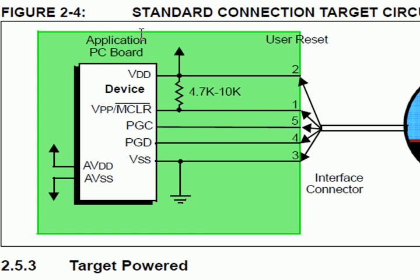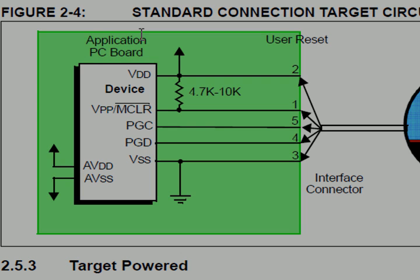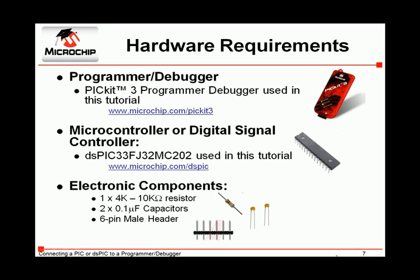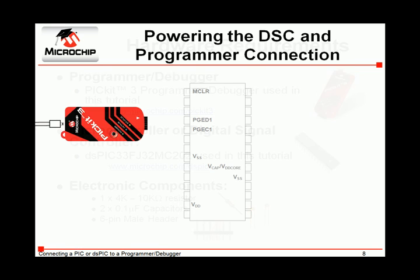Let's now take a look at how we would implement this circuit. The hardware we will need includes the programmer debugger of choice, shown here as the PICKIT-3, a target device such as a DSPIC33FJ32MC202 digital signal controller, and a few passive components including a resistor, two capacitors, and finally the corresponding connector for the PICKIT-3, a 6-pin male header.